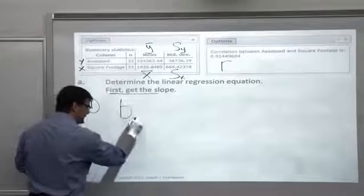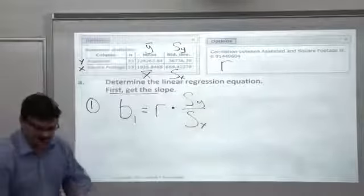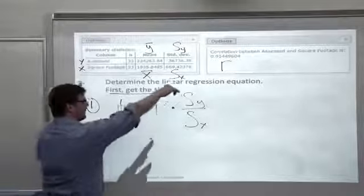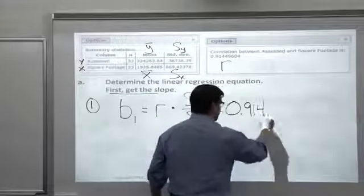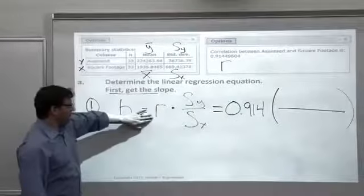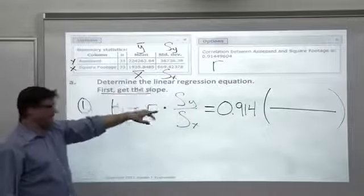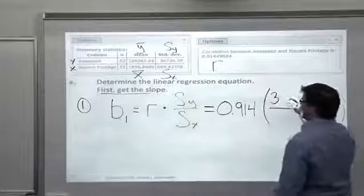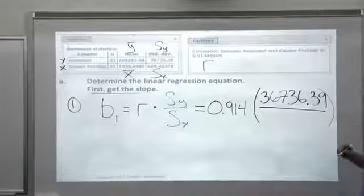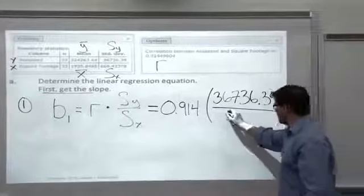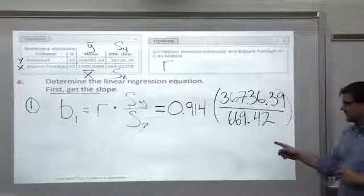Here's the formula again. B1 equals R times S sub Y over S sub X. We have all the numbers up top, so we know the value of R. I'll just round that to .914 for the correlation. S sub Y over S sub X, so the 36,736 goes up top, the 669 number goes on the bottom. I'll round these to two decimals. S sub Y up top: 36,736, I'll put the .39. Standard deviation for X square footage, I'll just do 669.42.